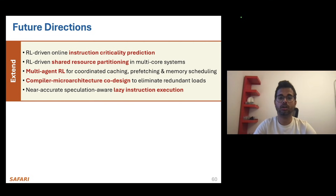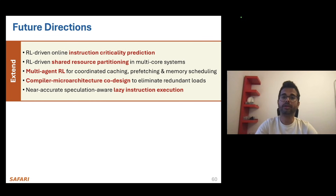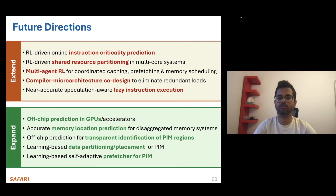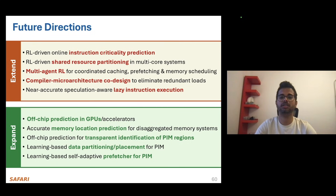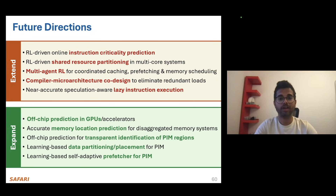We believe that the machine learning driven and data-driven microarchitectural design principles can be extended further in multiple other microarchitectural decisions. For example: RL-driven online instruction criticality prediction, RL-driven shared resource partitioning, multi-agent RL for coordinated caching, prefetching, and memory scheduling. It can also be expanded beyond general purpose processor design — for example, off-chip prediction in GPUs, accurate memory location prediction to reduce latency in disaggregated memory systems, and off-chip load prediction for transfer and identification of beam regions. With that, I would be concluding my talk. If you have any questions, I'd be happy to take them. Thank you very much.